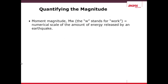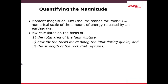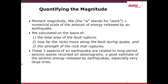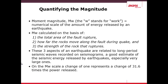Quantifying the magnitude of an earthquake uses what's also called the Richter scale, but more specifically the moment magnitude scale, abbreviated MW. It is a numerical scale that identifies an earthquake based on its energy released. It is calculated by the total area of the fault rupture, how far the rocks move along the fault, and the strength of the rock that ruptures. On the MW scale, a change of 1 — for example going from 2 to 3 — represents a change of 31.6 times the seismic power released.